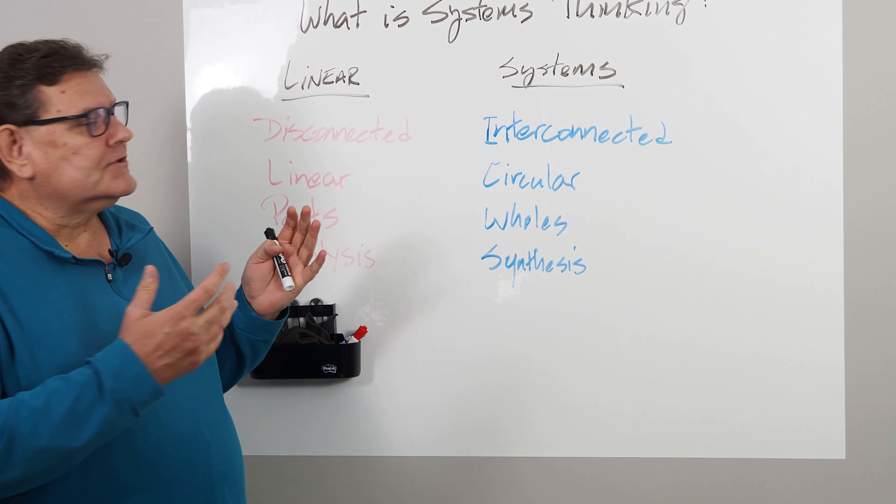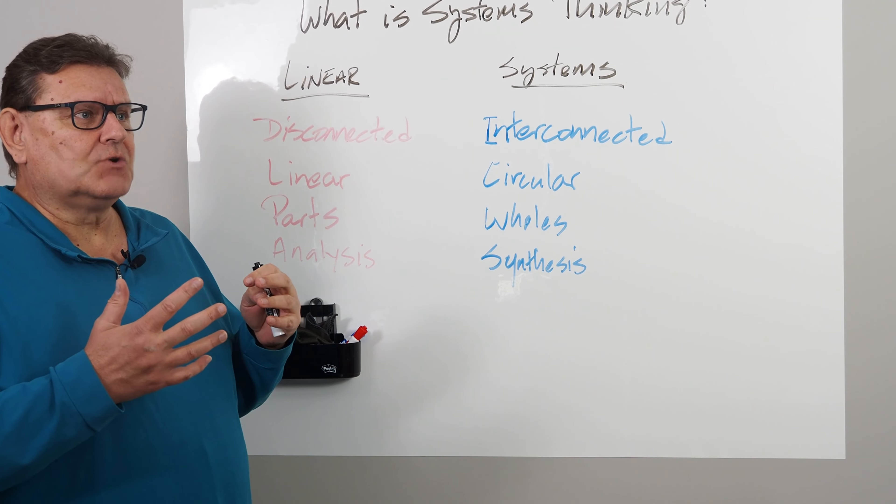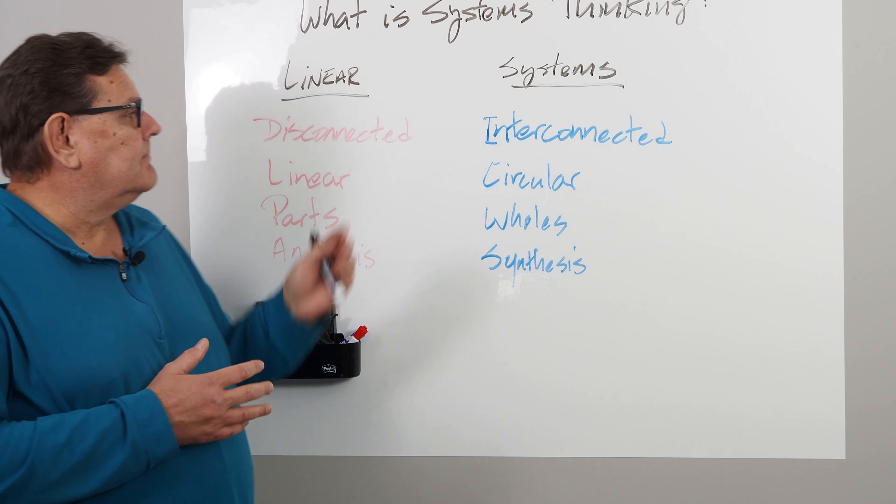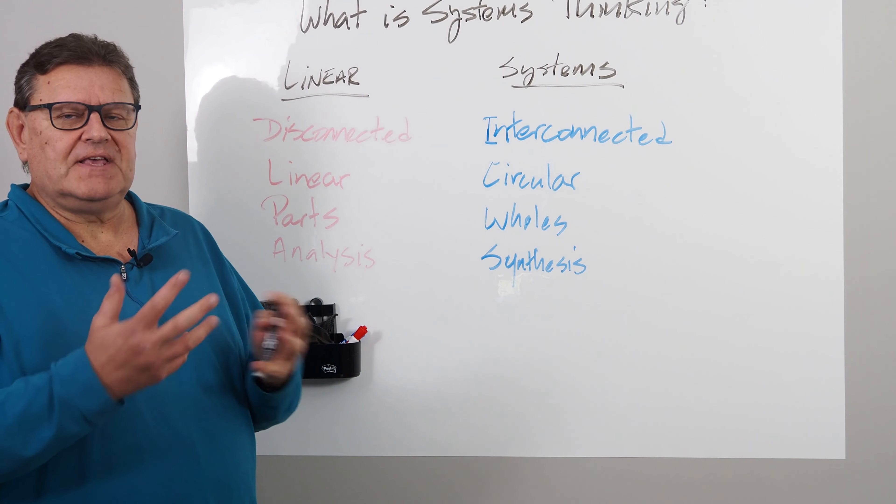Systems thinking is a way of thinking that sees the interconnections between everything. Linear thinking sees things as disconnected pieces.